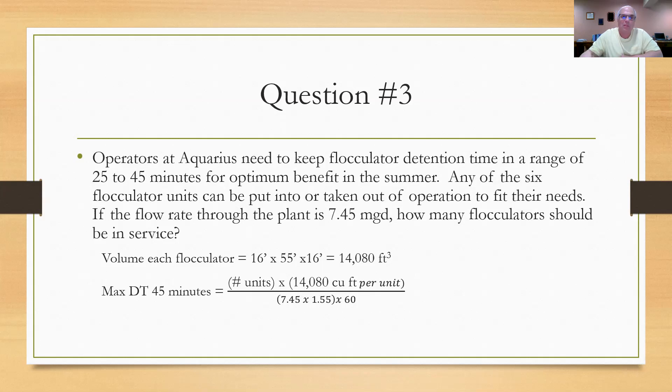divided by 7.45 flow rate, multiplied by the 1.55, which will give me cubic feet per second. If I multiply by 60, I get cubic feet per minute. So when I solve for x, or number of units, I get 45 times 7.45 times 1.55 times 60, divided by the total volume of one unit, and it comes up with 2.2 units. Now this gives us an opportunity to discuss flocculation time. Very important and critical step.